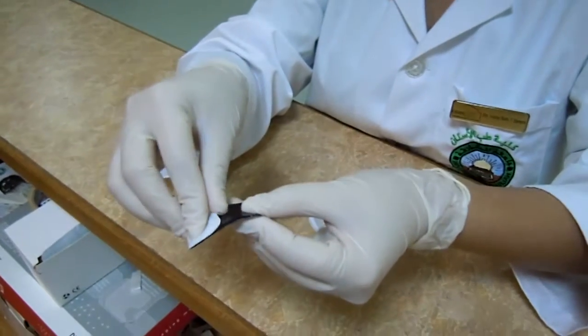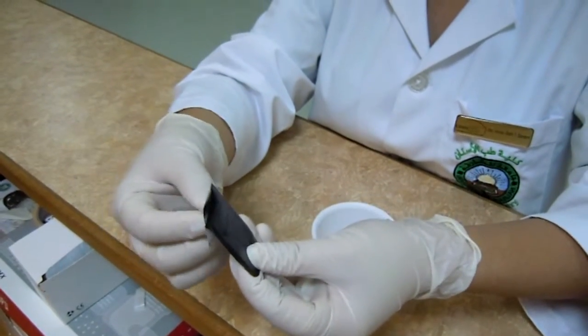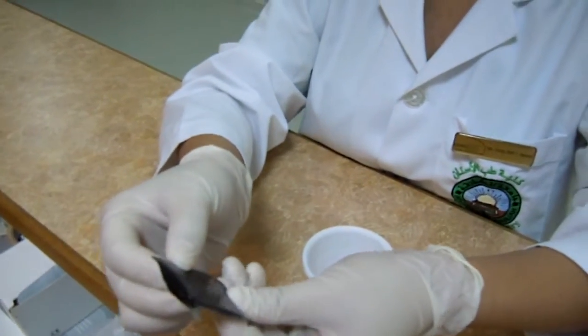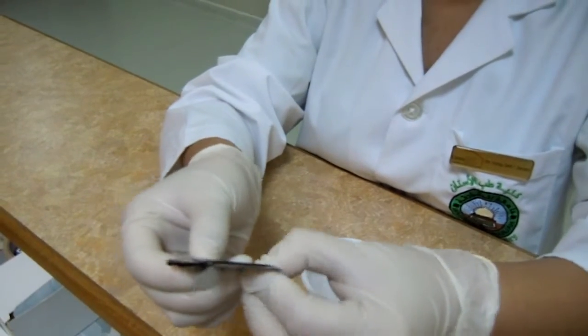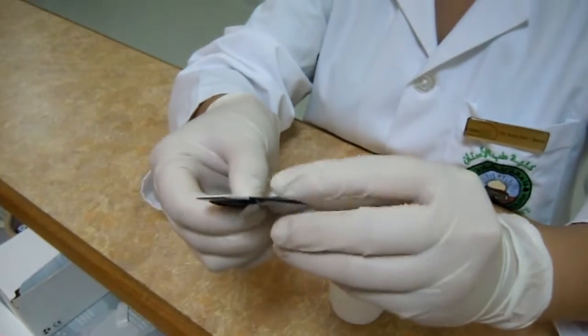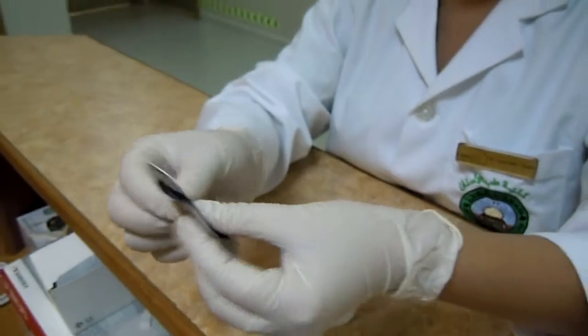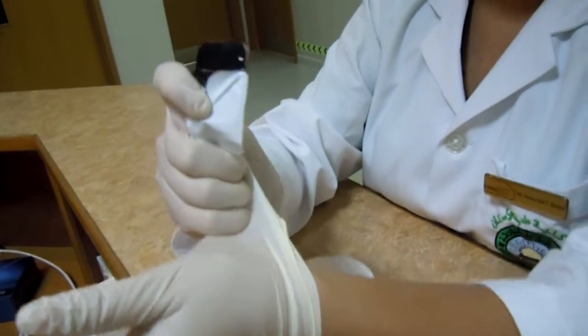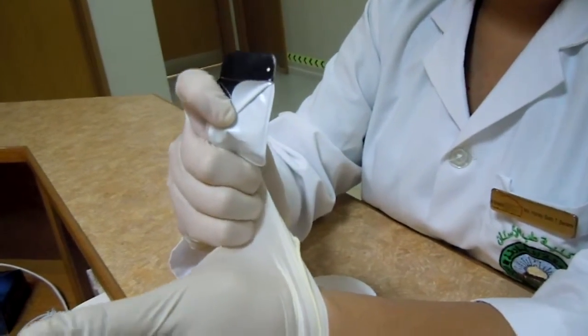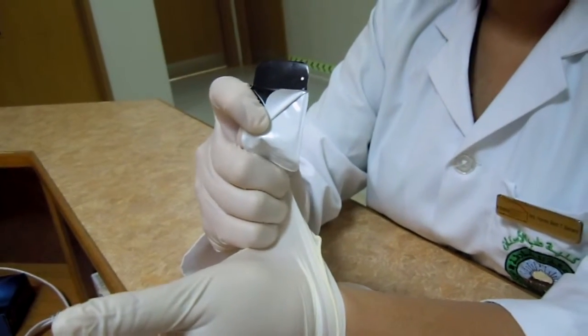Next she's going to break the seal, remove or slide out the sensor out of its pouch. Now the next very important step is, as you can see, with her right hand she is holding the contaminated sleeve.